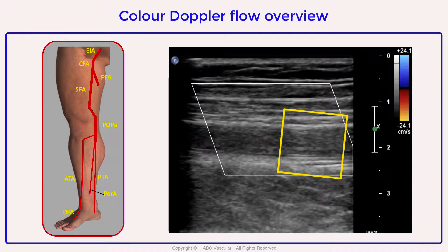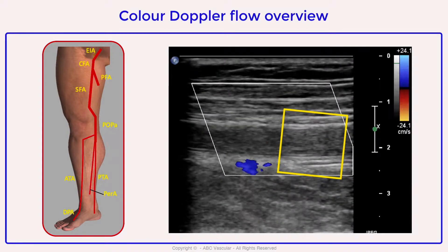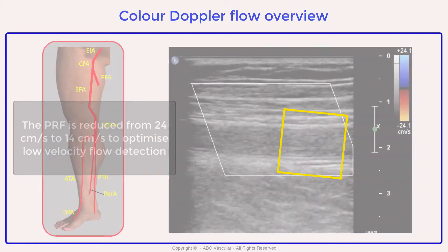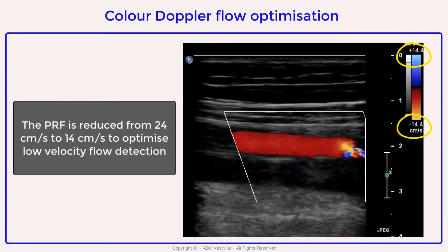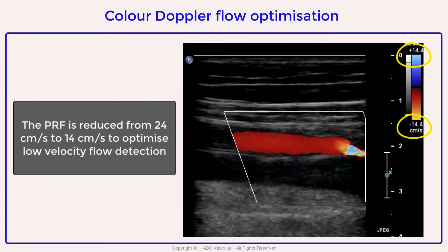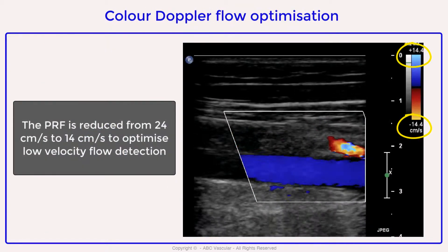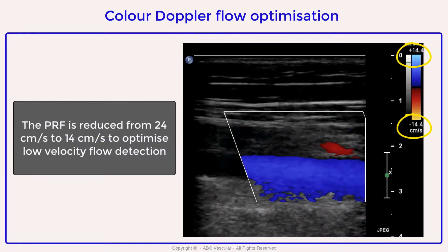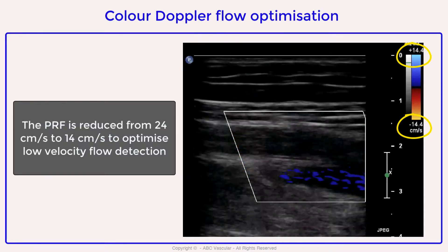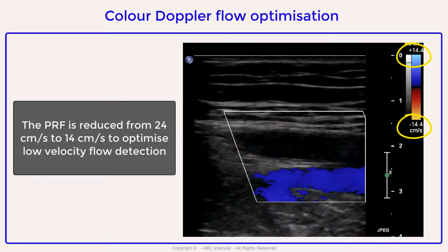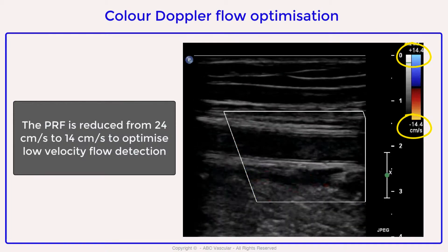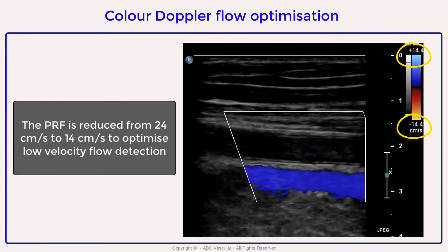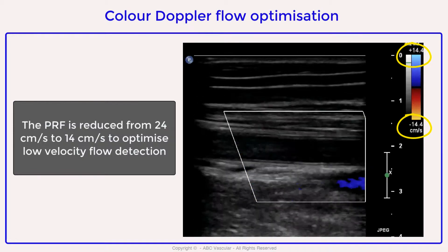We can confirm the absence of color filling by reducing the actual color scale. We bring the color scale down to 14, and we can confirm that while there is color flow filling the lumen of the femoral vein, there is no color flow filling the lumen of the superficial femoral artery.